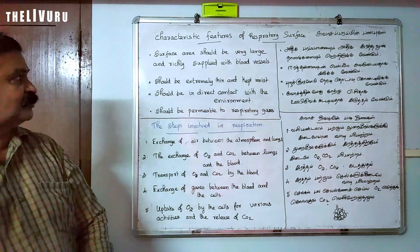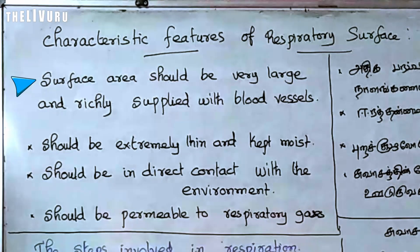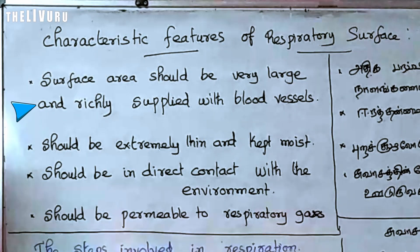What are the characteristics of alveoli? Let's see one by one. First one: the surface area should be very large and richly supplied with blood vessels.